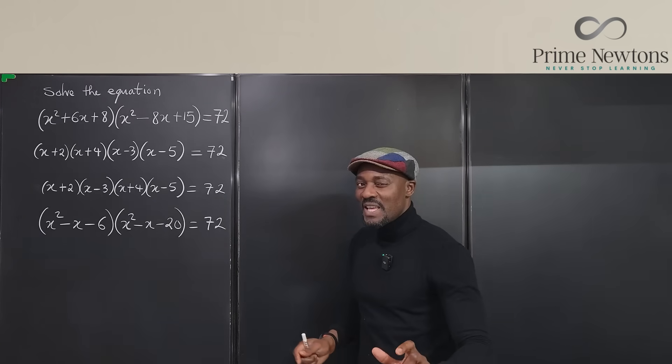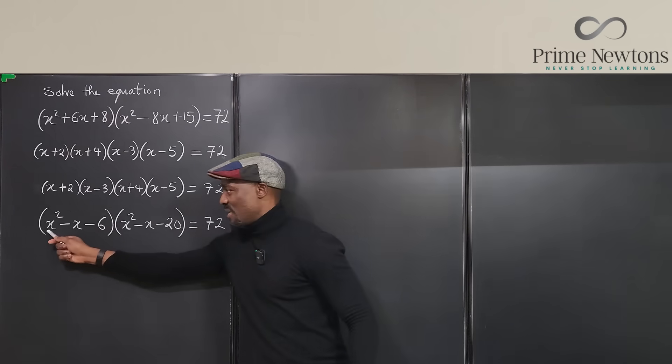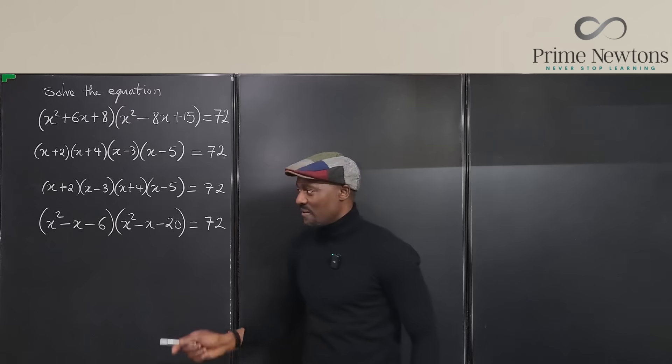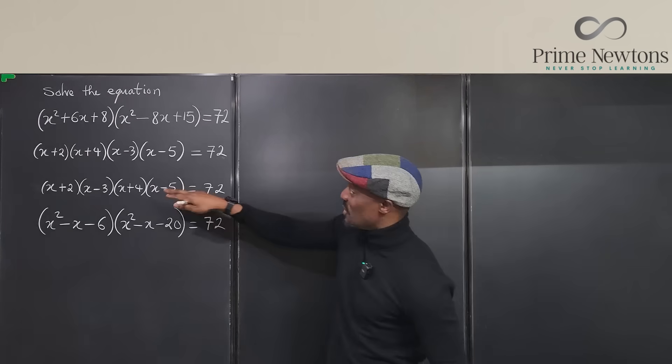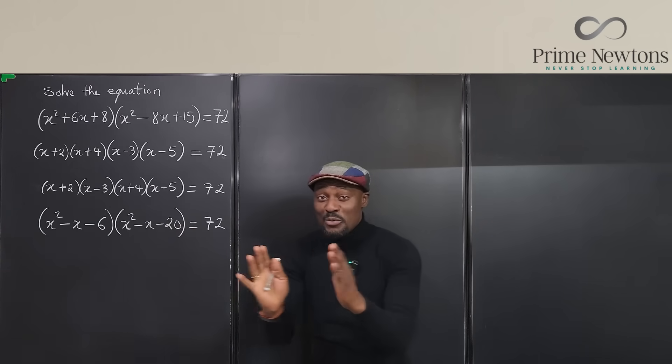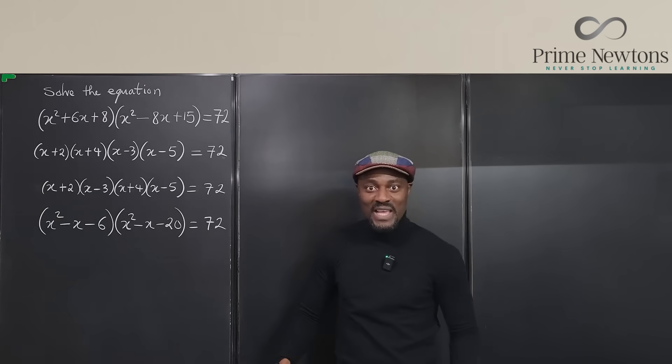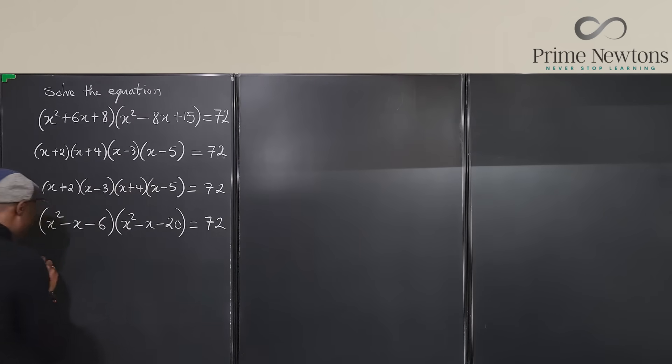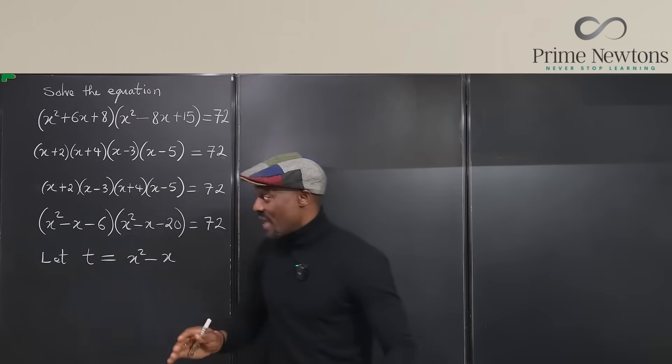But something similar has shown up. Do you know what it is? x squared minus x is present in the first one. x squared minus x is present in the second one. That's the whole thing I was looking for. You just need to arrange them so that the beginning part of the first one is the beginning part of the second one. And then I can say, let t be equal to x squared minus x. Because once you do that, you can go back here and rewrite this equation.